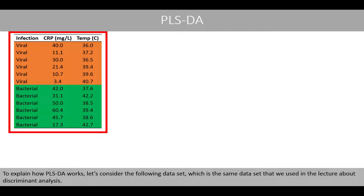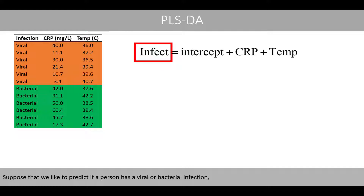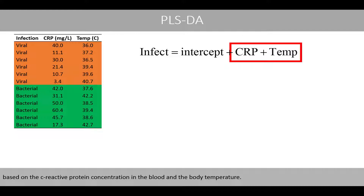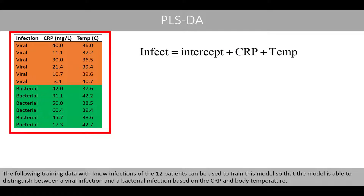To explain how PLS discriminant analysis works, let's consider the following dataset, which is the same dataset used in a lecture about discriminant analysis. Suppose that we like to predict if a person has a viral or bacterial infection based on the C-reactive protein concentration in the blood and the body temperature. The following training data with known infections of 12 patients can be used to train this model so that the model is able to distinguish between a viral infection and a bacterial infection based on the CRP and the body temperature.